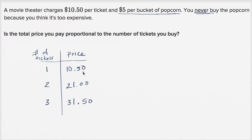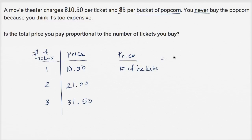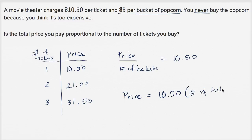You can see the ratio between price and number of tickets is always going to be $10.50. $10.50 divided by one, $21 divided by two, $31.50 divided by three — it's always going to be $10.50. Put it another way, the price is just going to be $10.50 times the number of tickets. So clearly a proportional relationship.